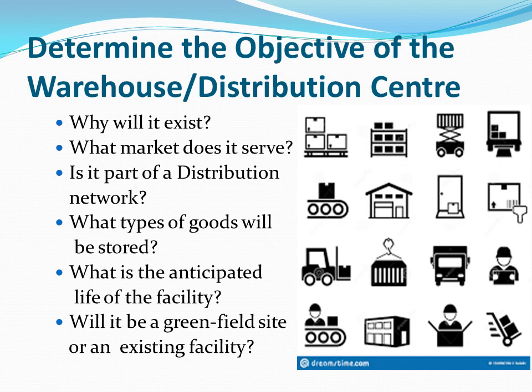The first principle is to determine the objective of the warehouse or distribution center. The first step is to define the objectives and goals by finding out: why will it exist? What market does it serve? Is it part of a distribution network? What types of goods will be stored? What is the anticipated life of the facility? Will it be a greenfield site or an existing facility? It is vital to write these objectives down so that all associated parties remain cognizant of the expected outcome, especially when timing, budget, or resource issues tempt stakeholders to compromise operational or design goals.